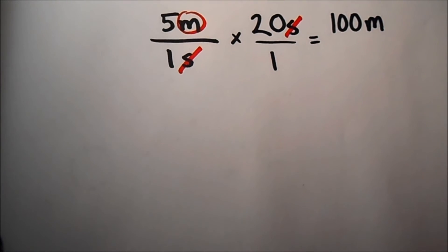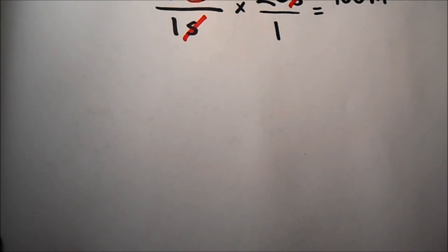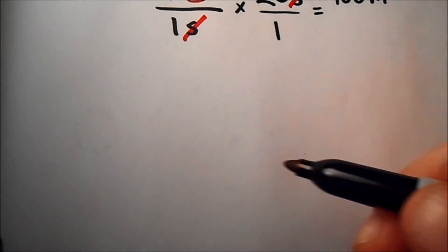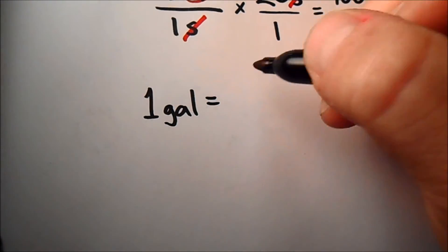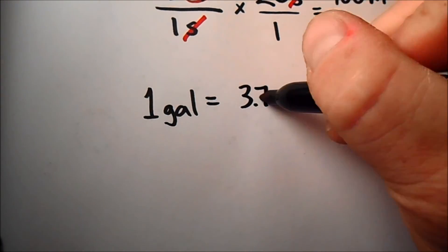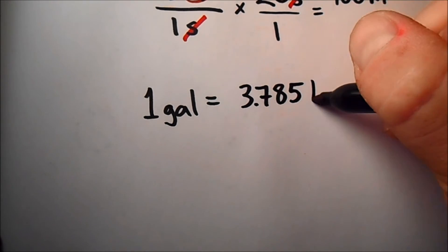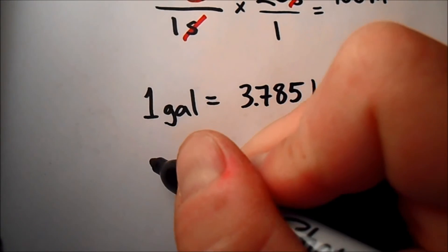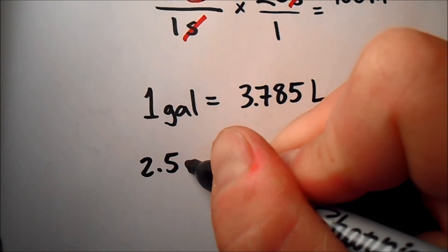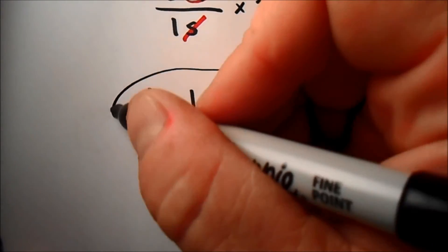Now dimensional analysis is quite often used when we do conversions. Let's say we wanted to convert something like from gallons to liters. We need to know what the conversion factor is. 1 gallon is equal to 3.785 liters. And so if we had a conversion of, let's say we measured out and we found 2.5 gallons, how many liters is that going to be?